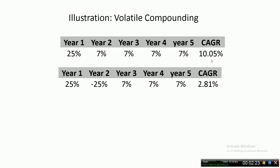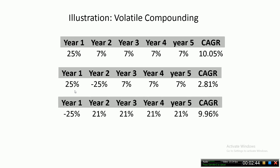As a second example, suppose you get that 25% in the first year, then get greedy and stay on for one more year. In the second year, you get minus 25%. Scared, you then run to the safety of fixed income and get only 7% return for the last three years. Your CAGR would only be about 3% over those five years — you have not made much money.